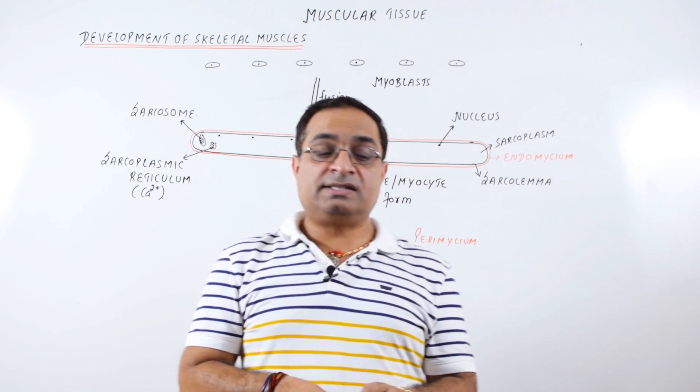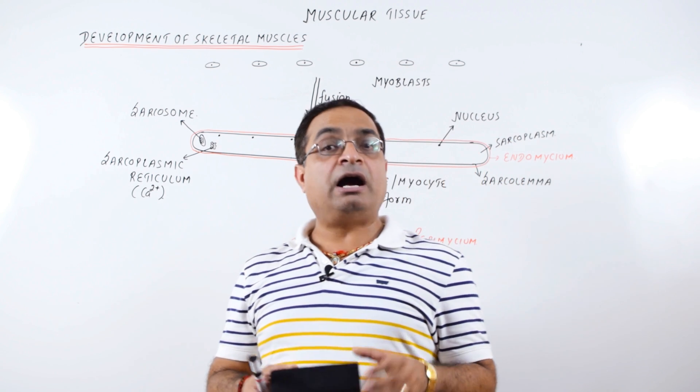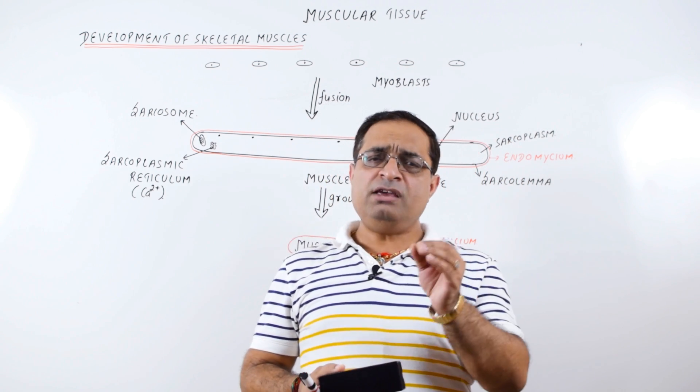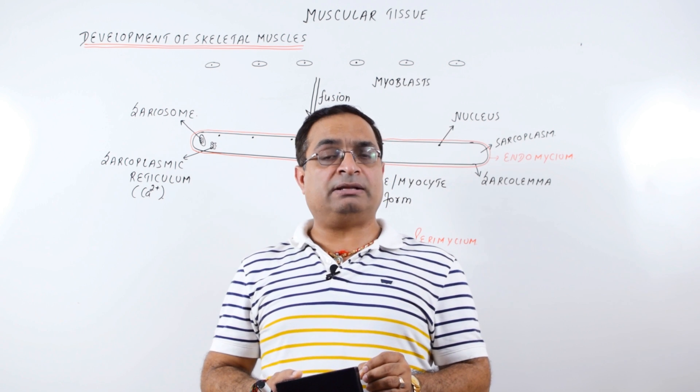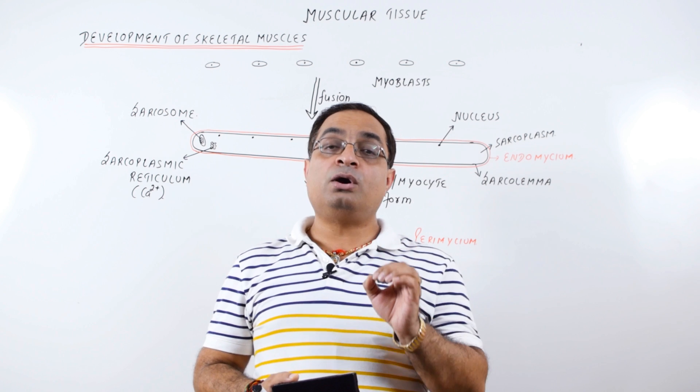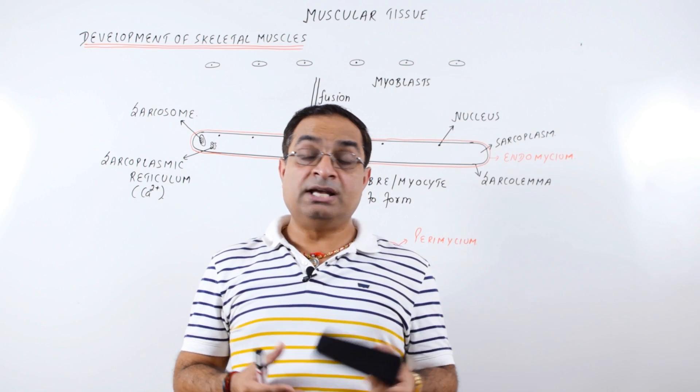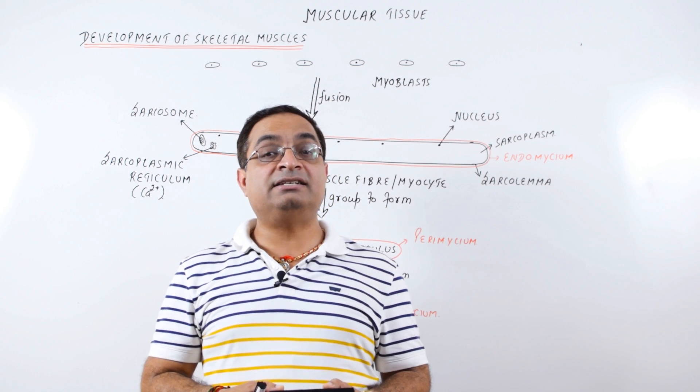Now these myoblast cells are present only during embryonic conditions. After birth of the baby, very few myoblasts persist in the muscle. These cannot form new muscle fibers. These can cause the minor repair of the damaged muscle fibers. These are also called satellite cells.